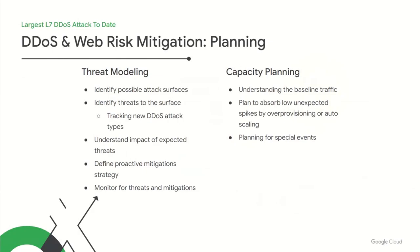Being ready for DDoS threats starts with early planning. We recommend that you do a comprehensive threat modeling of your cloud services by first identifying all the attack surfaces and then identify threats to those surfaces. It includes tracking new DDoS attack types and understanding the impact of those threats. The next step involves defining a strategy with proactive mitigations, and finally being able to monitor for those threats and the impact of mitigations. Planning also includes capacity planning — you should understand the baseline traffic and make sure the service is not run at capacity. You should plan to absorb unexpected spikes by over-provisioning your service or enabling auto-scaling so GCP can increase capacity on a need basis, with separate capacity planning for special events like retail events and new product launches.